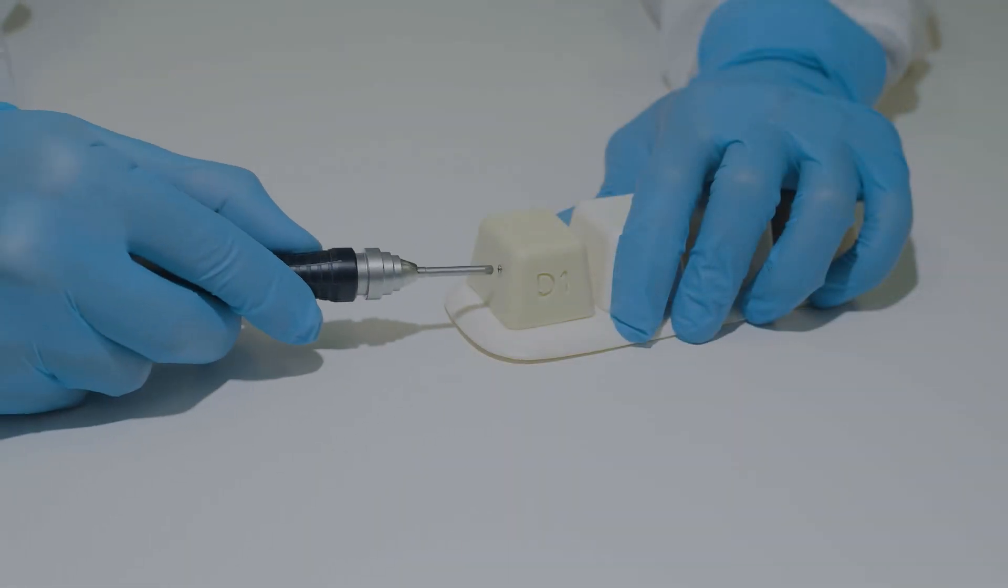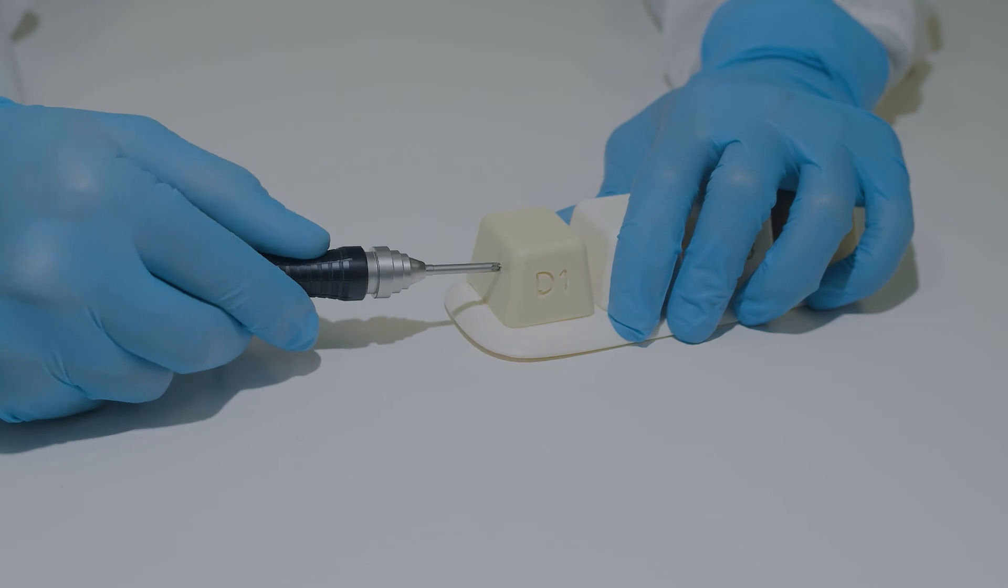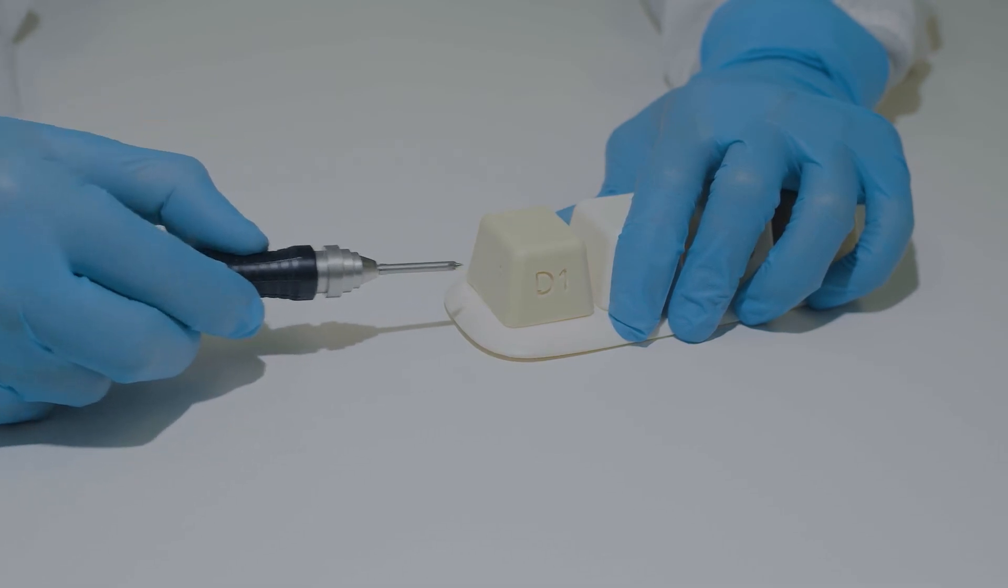When the screw is ready to be removed, it is the exact same process except turning the black piece counterclockwise.